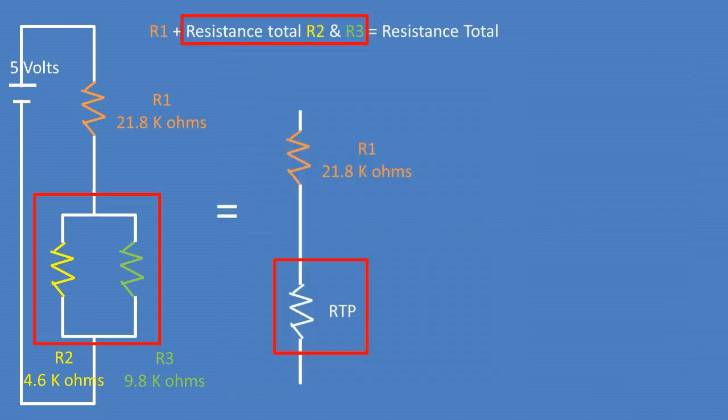We will start out by finding the resistance total of the total circuit. We can view the circuit as a resistor in series with a parallel circuit attached to it in series. So if we find the total resistance of the resistor in parallel, we can treat it as two resistors in series.